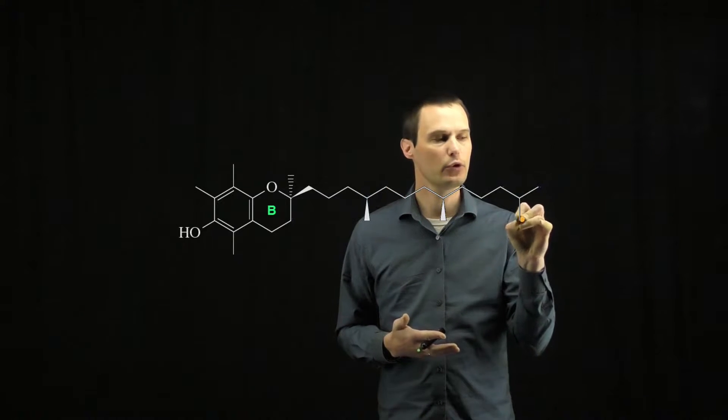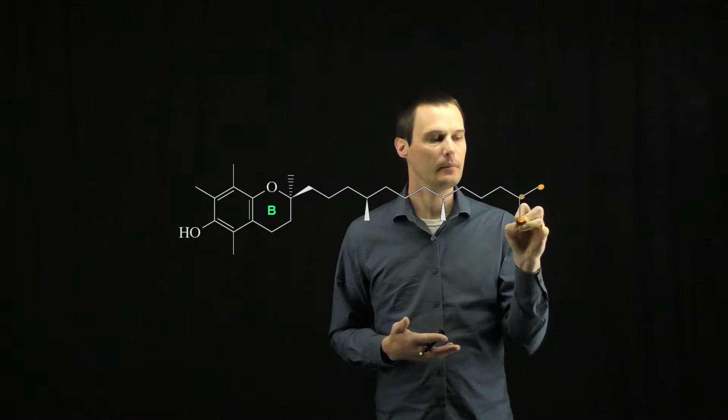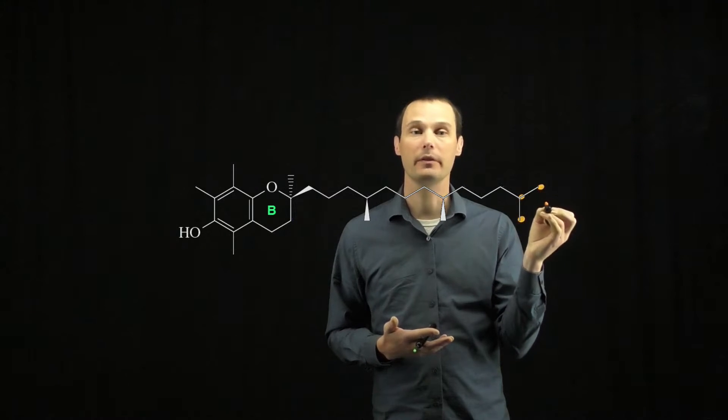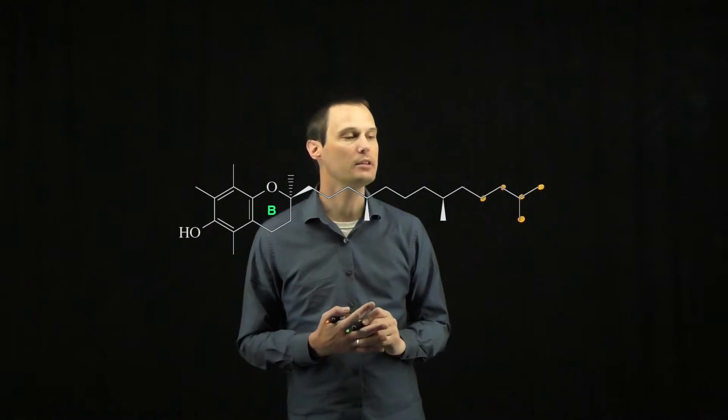So starting on the end of the molecule, I see these two methyl groups. Those are connected to this carbon. So these three carbons make up three of the five carbons. This would be carbon four then, and carbon five. So this is one of the isoprene units in this molecule.